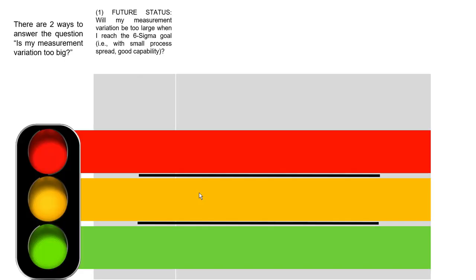So let us understand these two things — two ways to answer the question: is my measurement system variation too big? First, we will check in the future state: will my measurement variation be too large when I reach the Six Sigma goal? It means whether my measurement variation will be too large and impact the overall process variation, leading to inconsistent and incorrect readings.